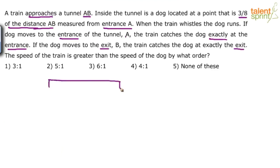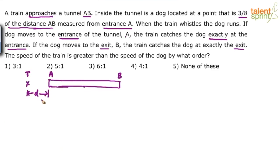Now this is the tunnel AB — entrance A and exit B. Here is the train approaching. Let us assume the distance between the train and the tunnel entrance is D. The train is approaching here, and the distance between the train and the entrance of the tunnel is D.